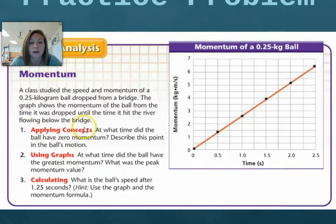And number one, applying concepts. You need to use the graph to determine what time the ball had no momentum and describe it in the scenario where it's at. Two, using the graph, you're going to say what time the ball had the greatest momentum and what was the peak momentum value. So when we say at what time in the scenario what was going on when it hit the greatest momentum, here we want an exact value for the second part of the question.